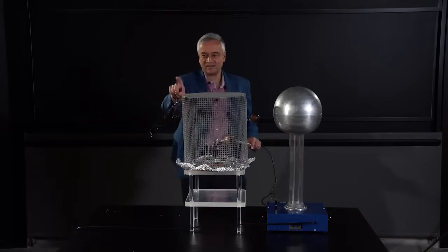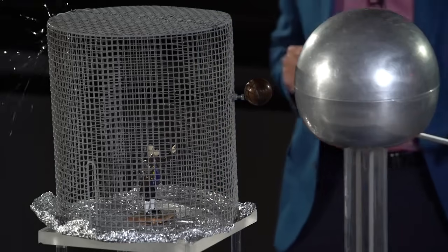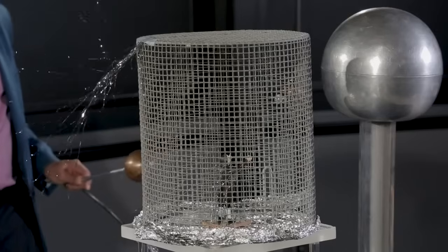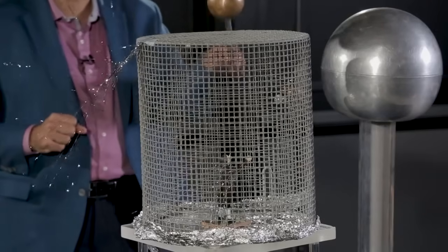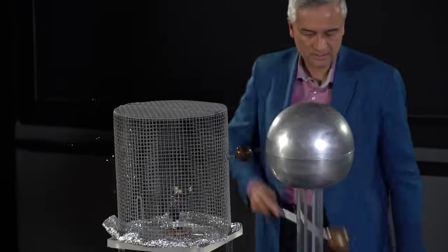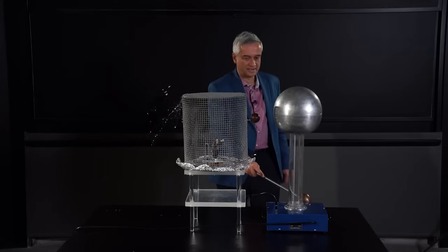If I touch that I get shocked. Okay, I just got shocked, but Benjamin is completely safe. This is the phenomenon of electrostatic shielding, and this kind of a cage is often called a Faraday cage. And we'll now turn the lightning off.